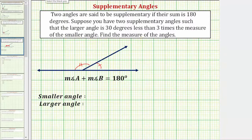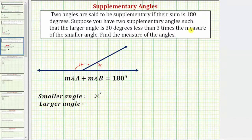Let the smaller angle have a measure of x degrees. The larger angle is thirty degrees less than three times the measure of the smaller angle, which has a measure of x degrees. Therefore the expression for the larger angle would be thirty less than three times x.